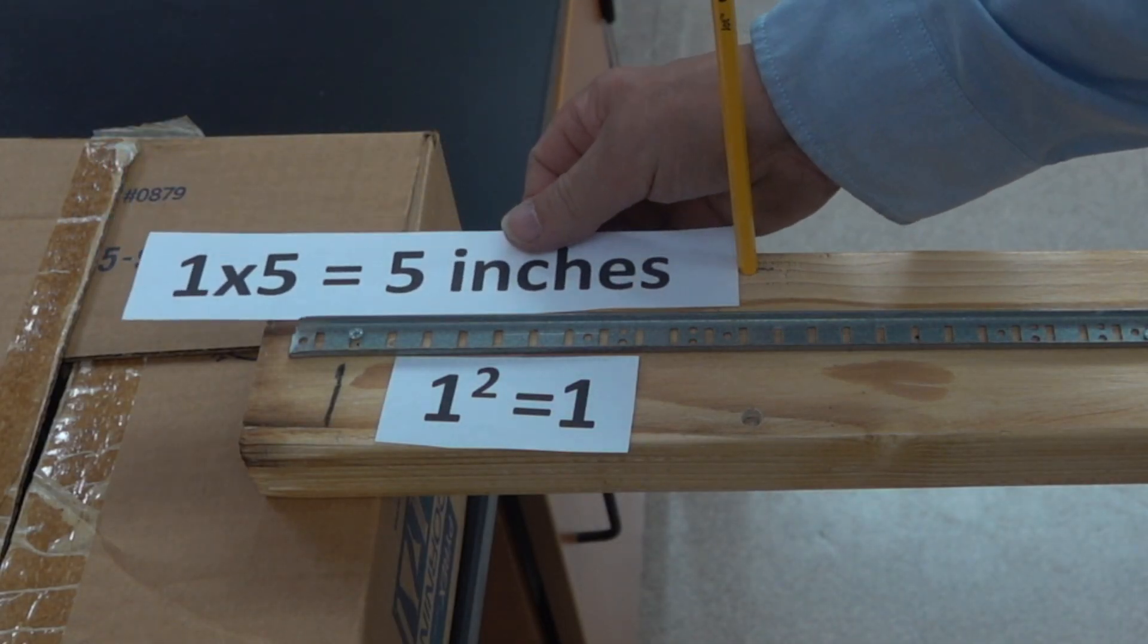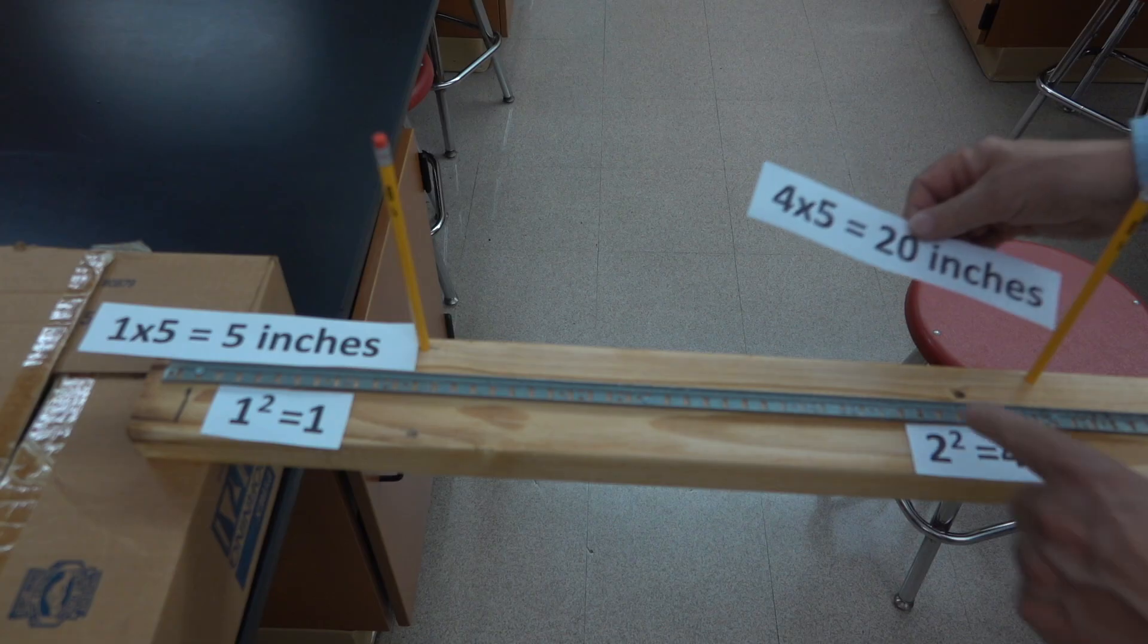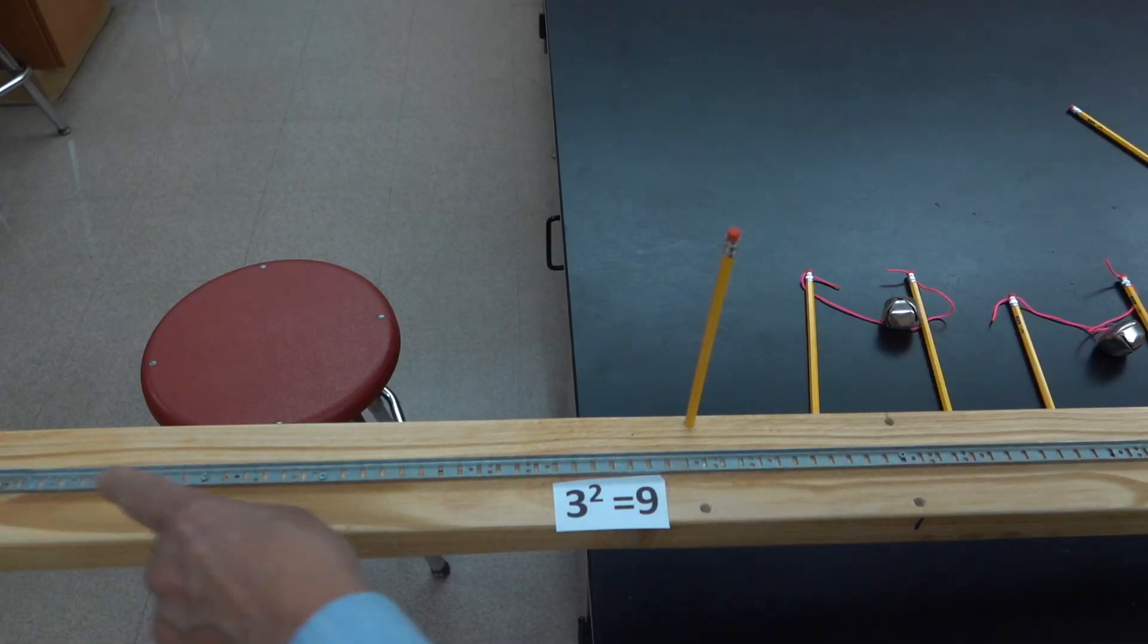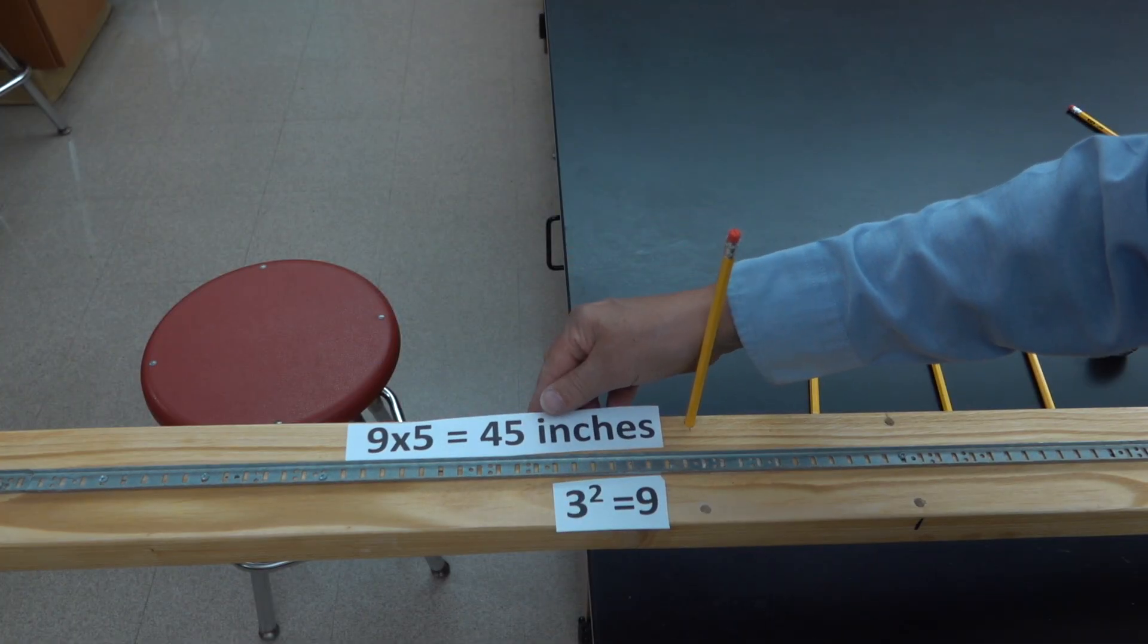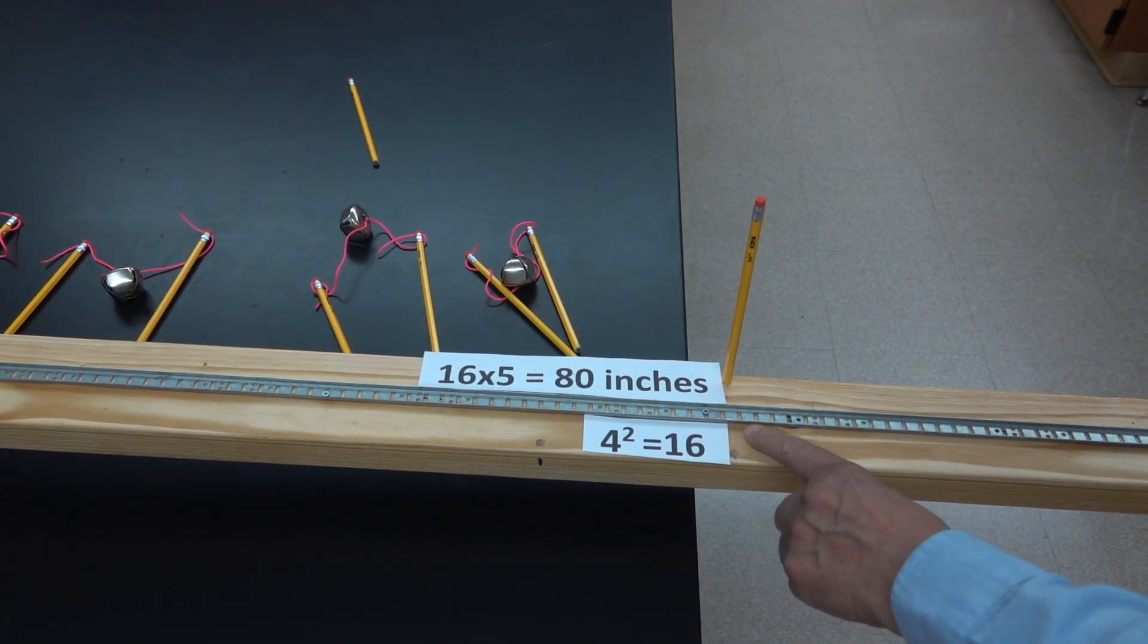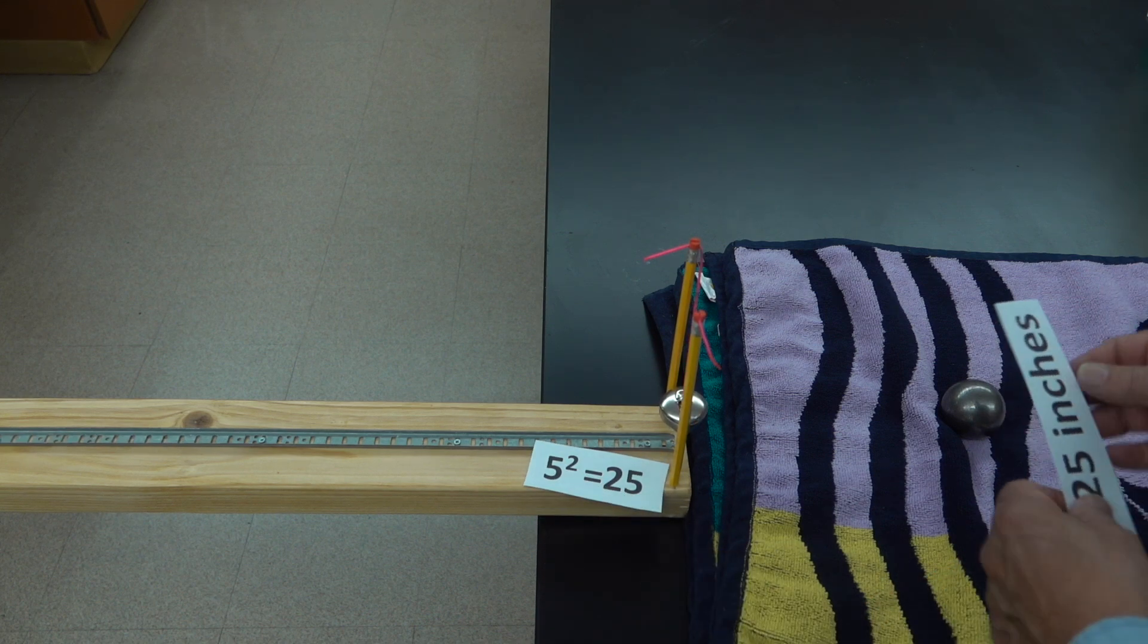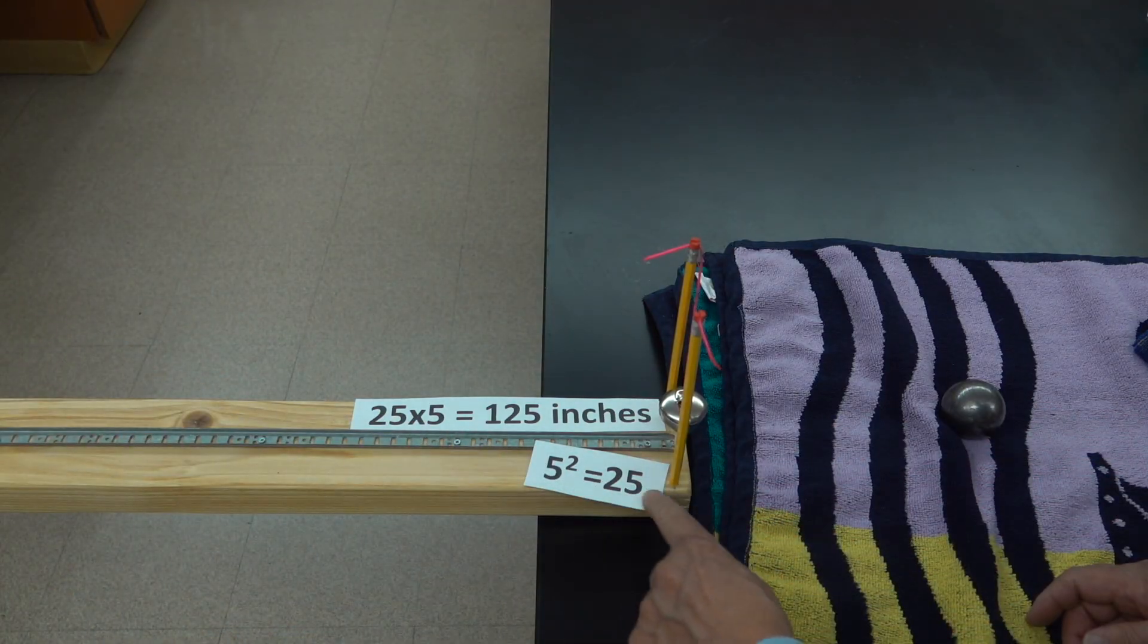With the track at the original angle, for the first second, the ball is going to travel five inches. In two seconds, it's going to go four times further, or 20 inches. In three seconds, it's going nine times further, or 45 inches. In four seconds, it's going 16 times further, or 80 inches. And finally, the whole track will take five seconds. The ball will go 25 times further than it did in the first second, which is 125 inches.